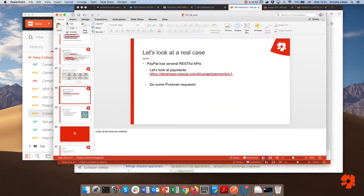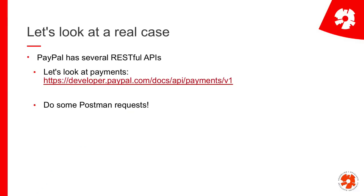We've looked at two real examples without doing much in Postman. The beauty of what we've done is that we haven't cared about how this is implemented — we just looked at the textual descriptions of how to use the API. We don't need to know how PayPal implemented this or what database they're using. All we need to know is what requests and URLs exist, how to send the requests, and what we get back.